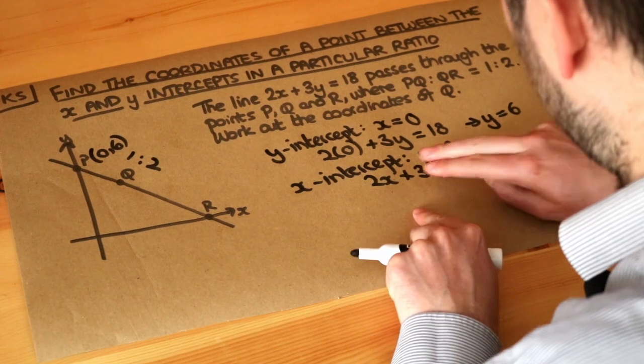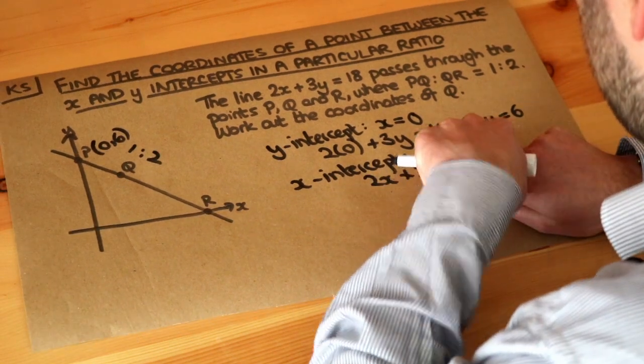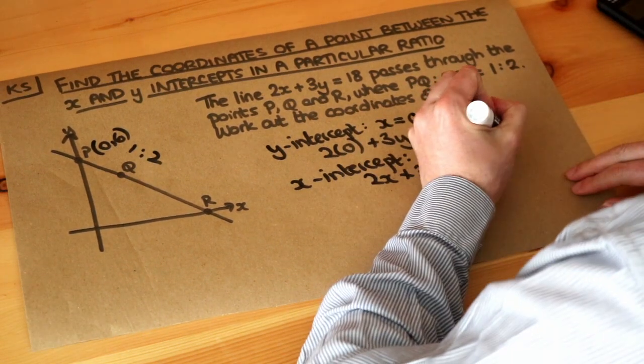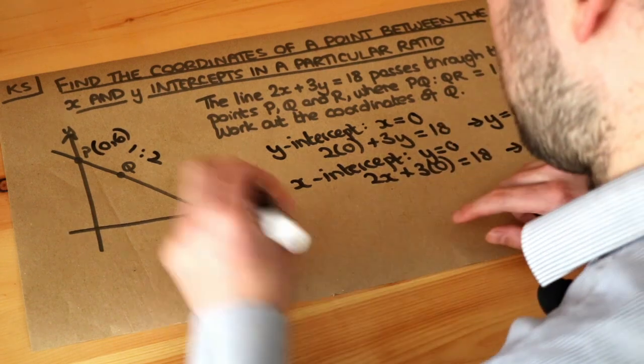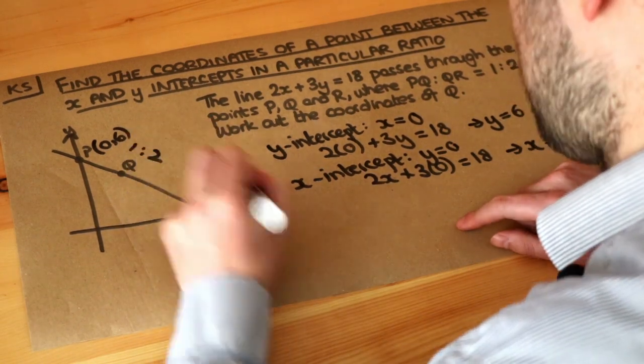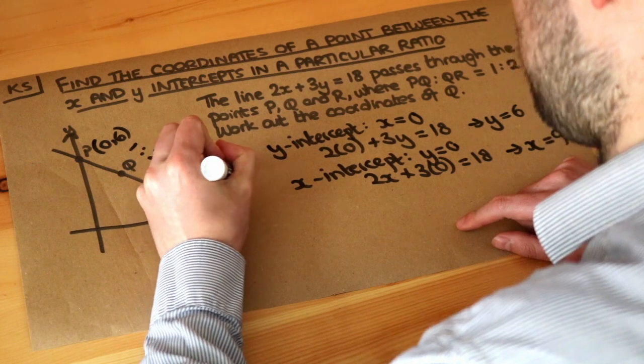Now 3 times 0 is just 0, so we can ignore this term. If 2x is 18, that means that x is equal to 9. And let's put those coordinates here. So we've got x is 9, y is 0.